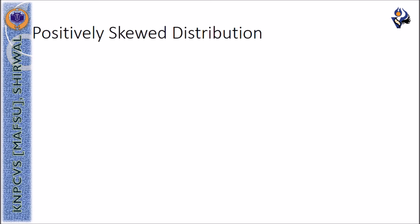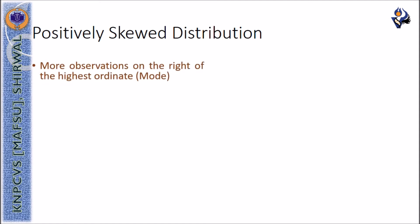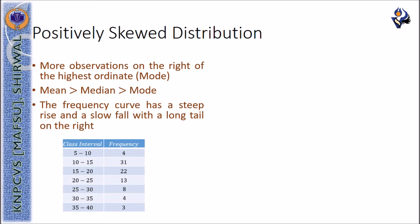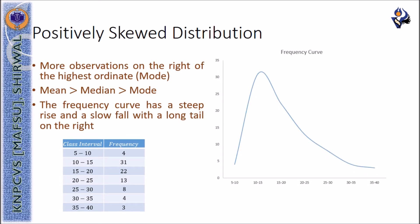In a positively skewed distribution, more observations will be observed on the right side of the highest ordinate, that is the mode. The mean will be greater than the median, which will be greater than the mode. The frequency curve has a steep rise and a slow fall with a long tail on the right. For example, the given data produces a typical positively skewed distribution where the arithmetic mean is higher than the median and the mode.